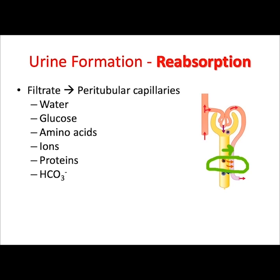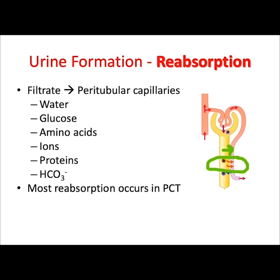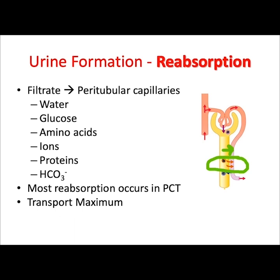The amount of bicarbonate ions reabsorbed will be dependent upon the blood pH. Reabsorption involves osmosis and also transport proteins. When transport proteins are involved, you can reach what is called transport maximum. Most of the reabsorption is going to occur in the proximal convoluted tubule — about 65% of the filtrate is reabsorbed here.